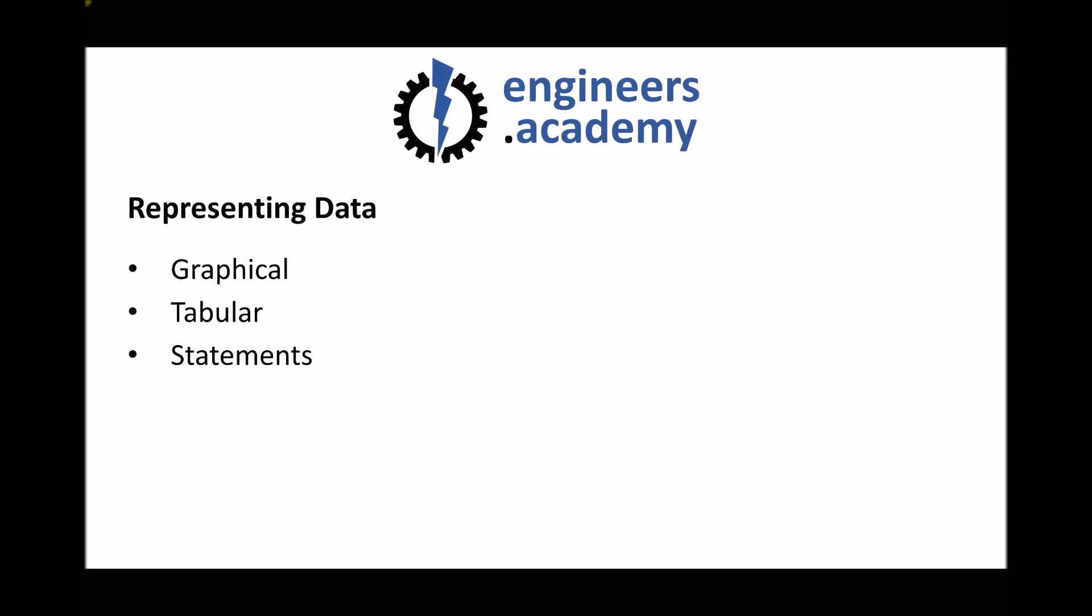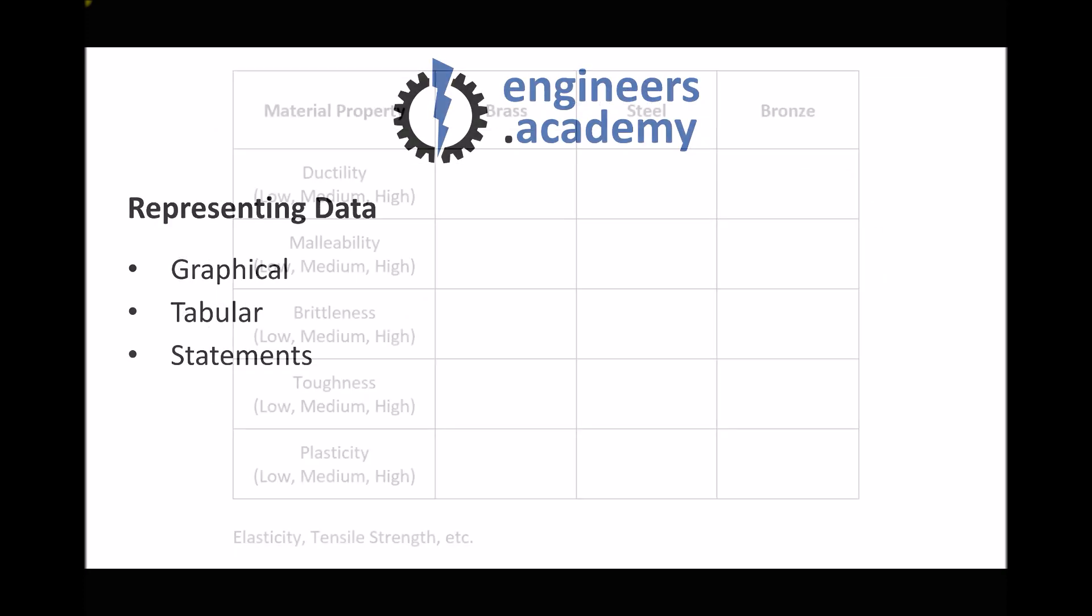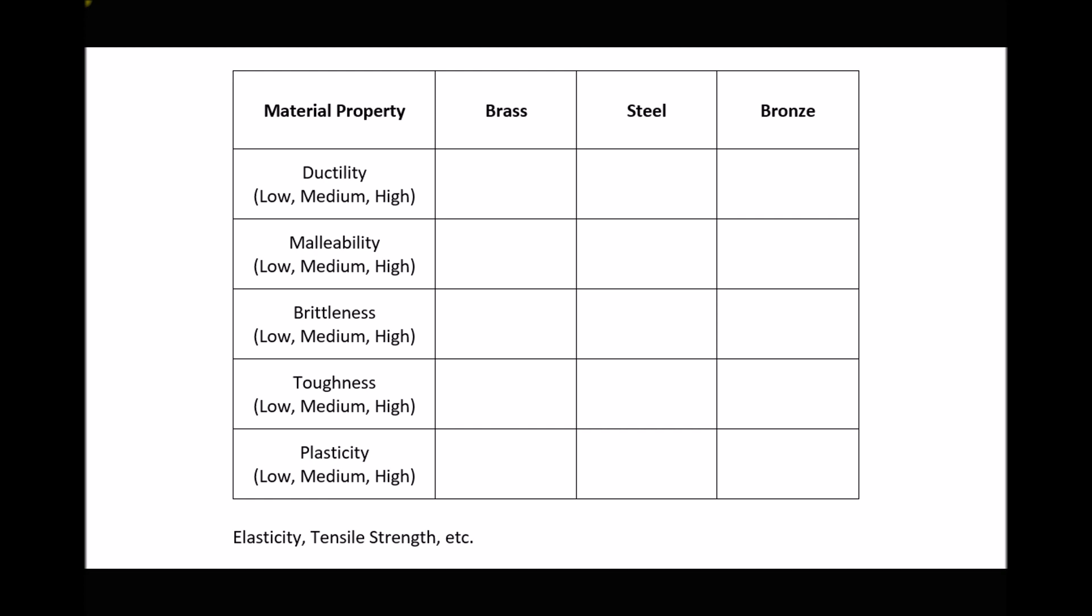Next, we have tables or tabular data. Here we have a table that could be used to analyze the properties of material samples from the observed data in our qualitative test. Looking at those three samples, we could rank those materials on ductility, malleability, brittleness, toughness, and plasticity as examples.